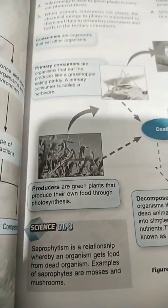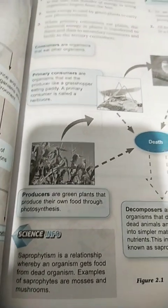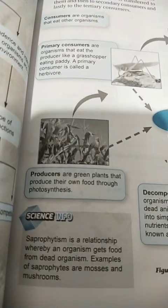Now back to part two of the science. Producers are green plants that produce their own food through photosynthesis.